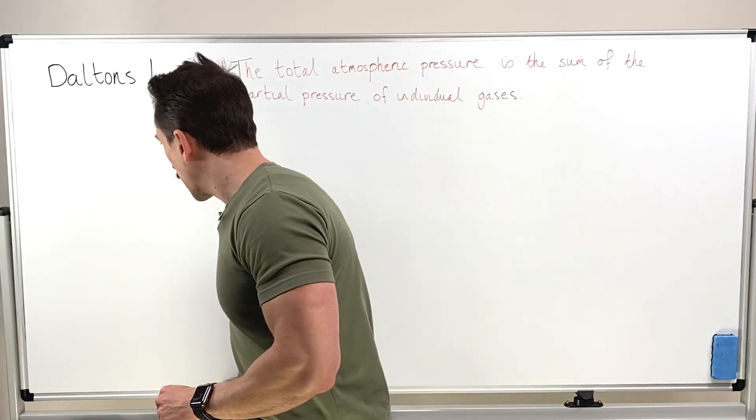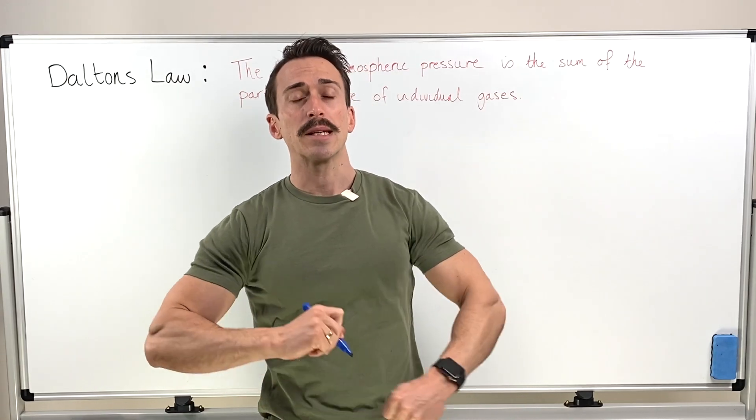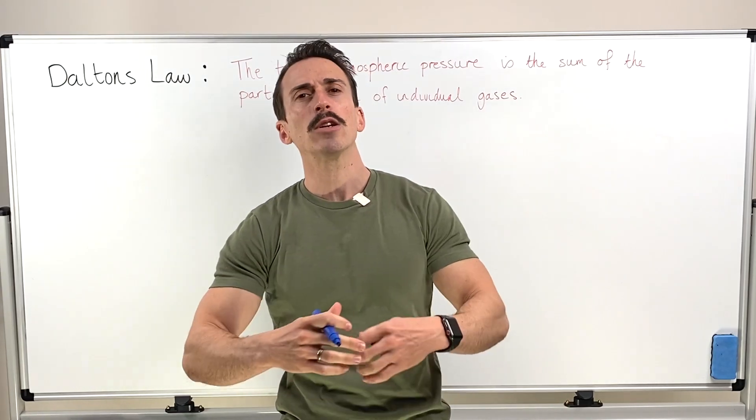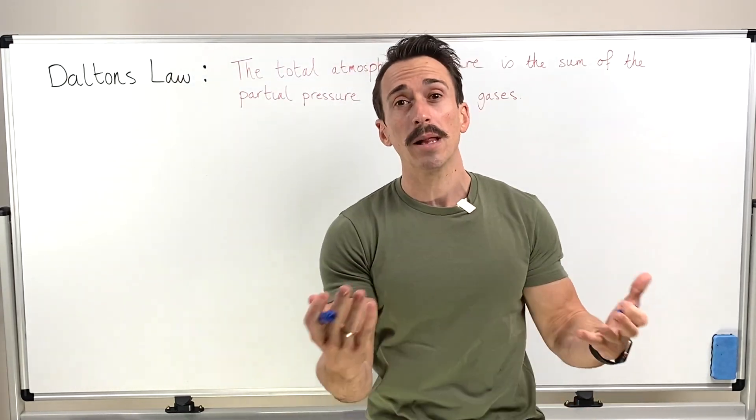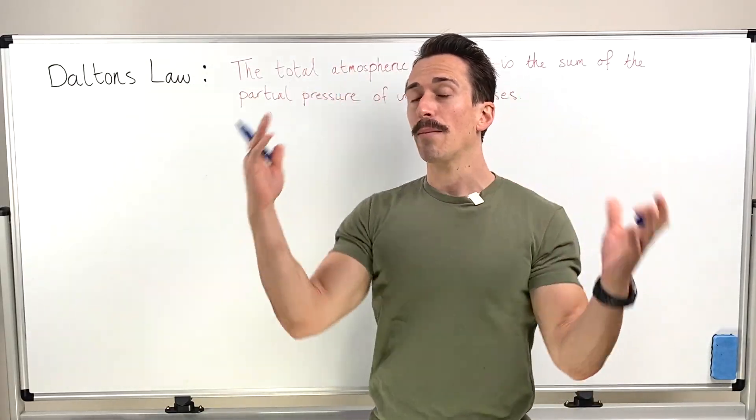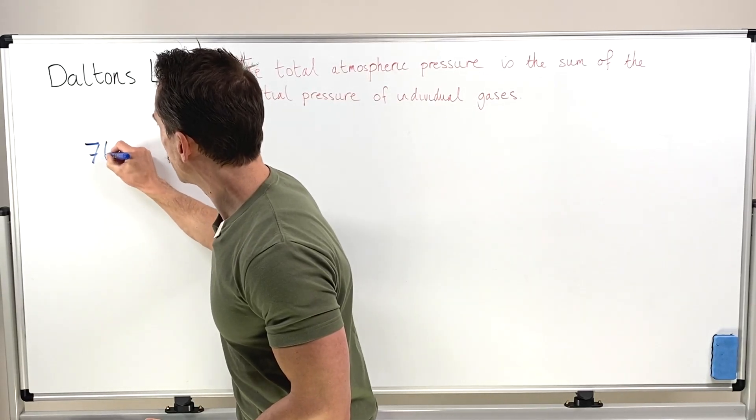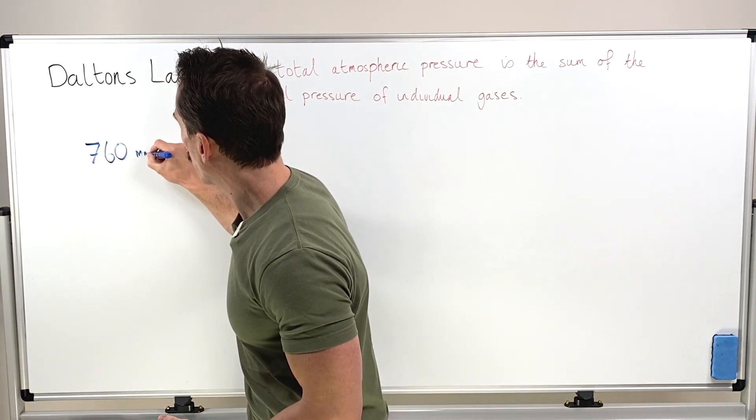Basically what it's saying is that the entire atmosphere around us has a particular pressure associated with it, and we can measure it in millimeters of mercury. So at sea level, the total atmospheric pressure around us is 760 millimeters of mercury.